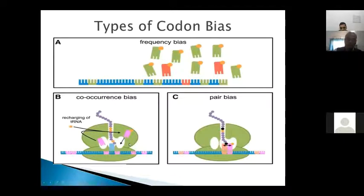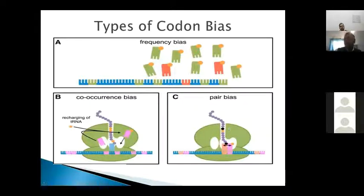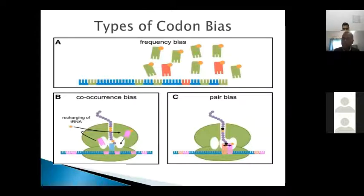The second is co-occurrence bias, where two identical codons appear side by side — repeat sequences of the same codon — and in that case recharging of the tRNA takes place within the ribosome itself. The third is codon pair bias, where two different kinds of codon pairs always exist together in a genome sequence.